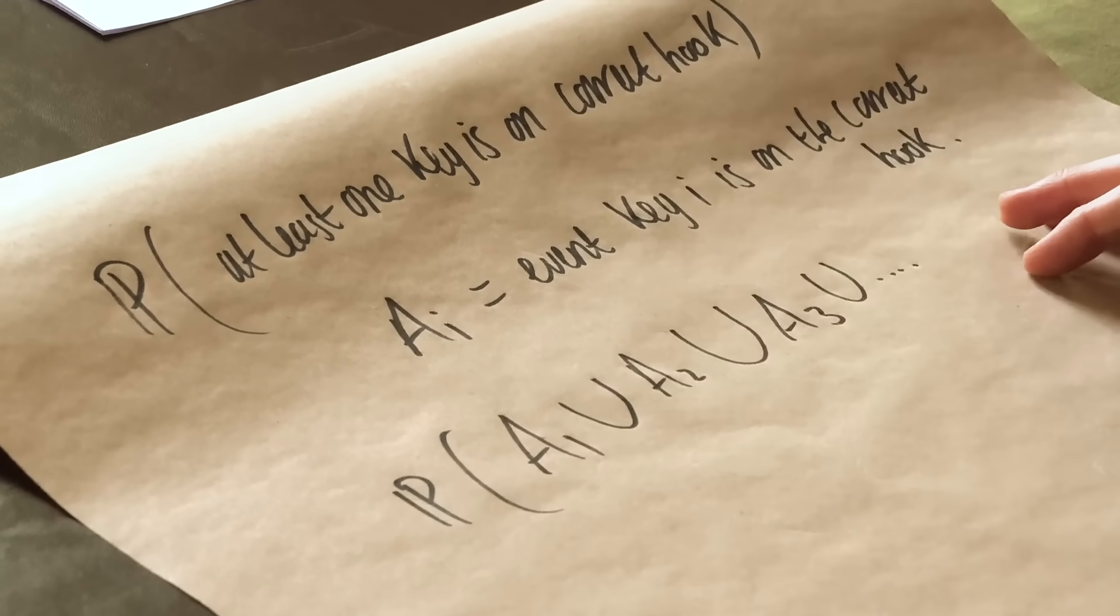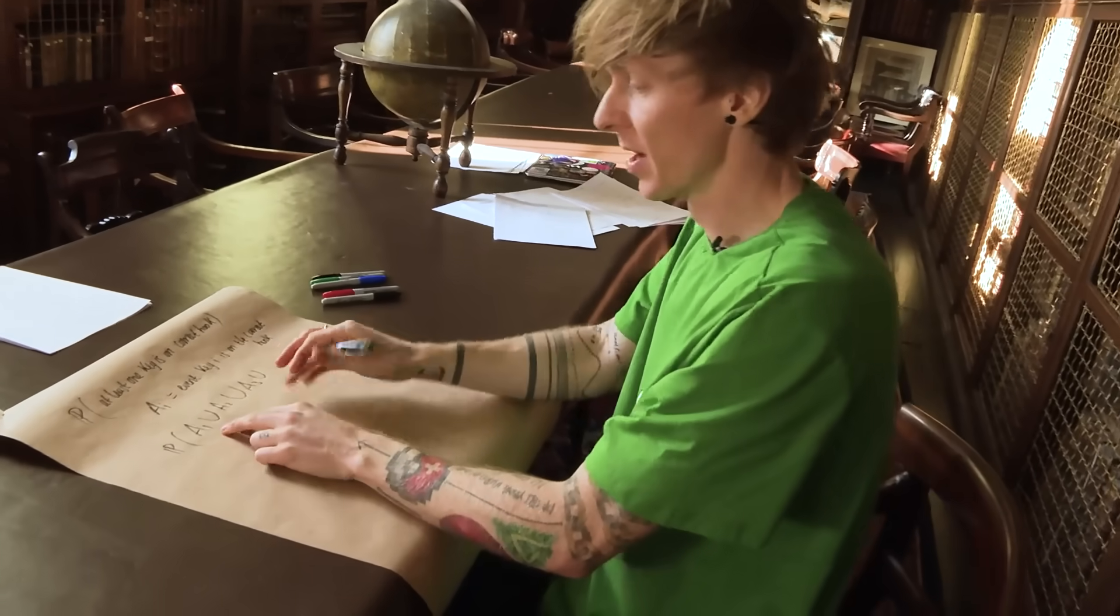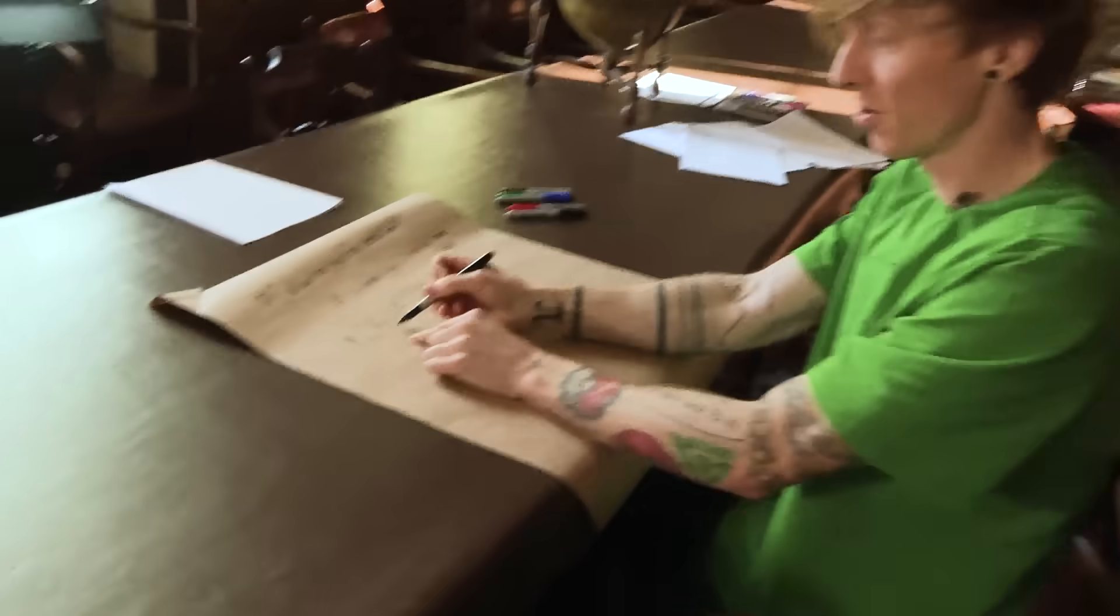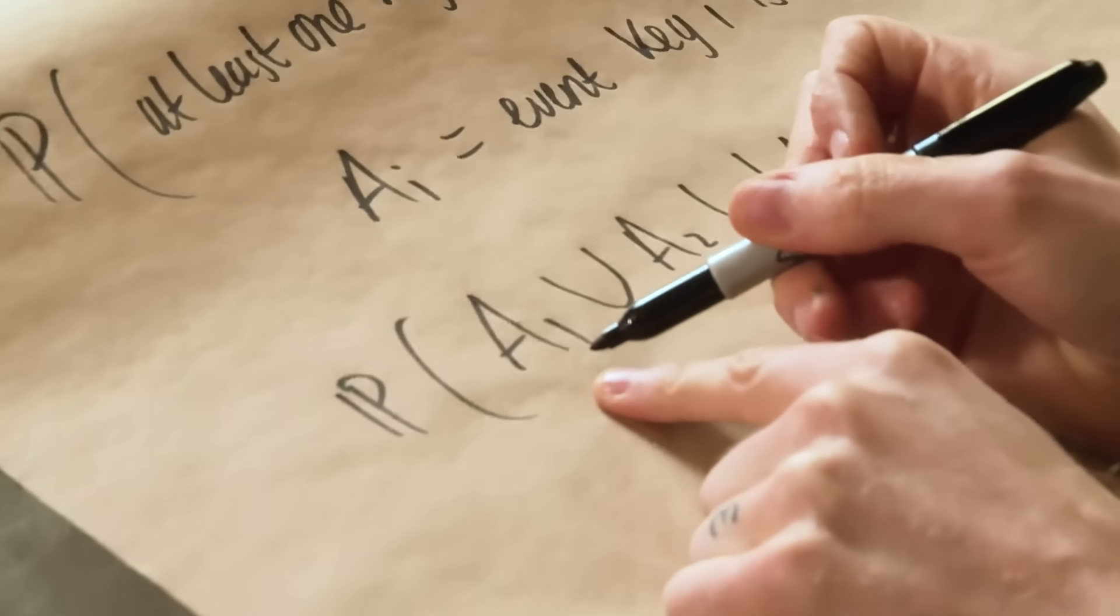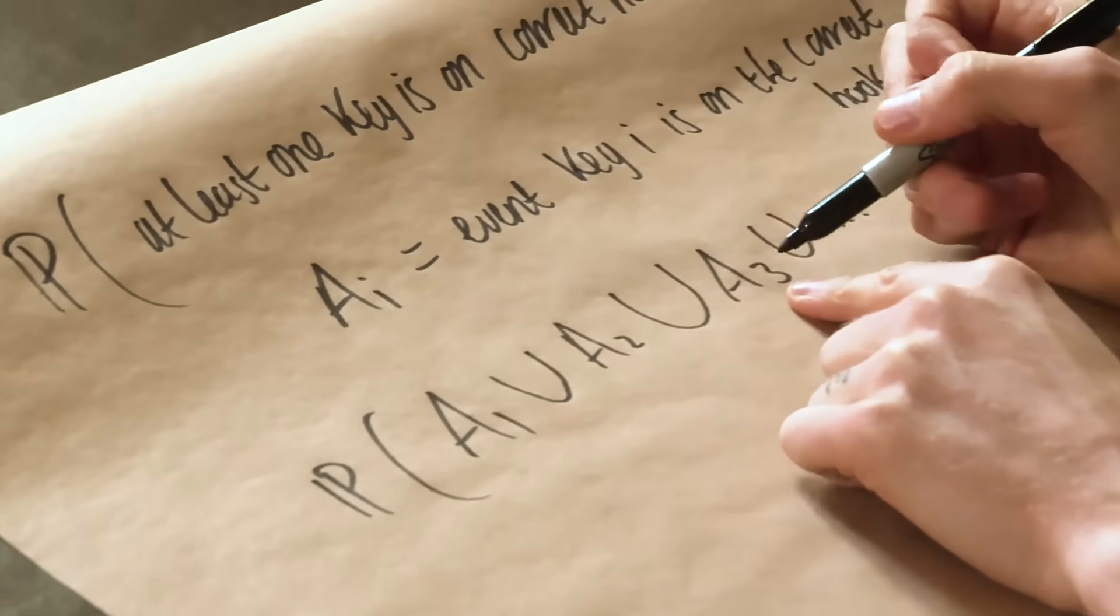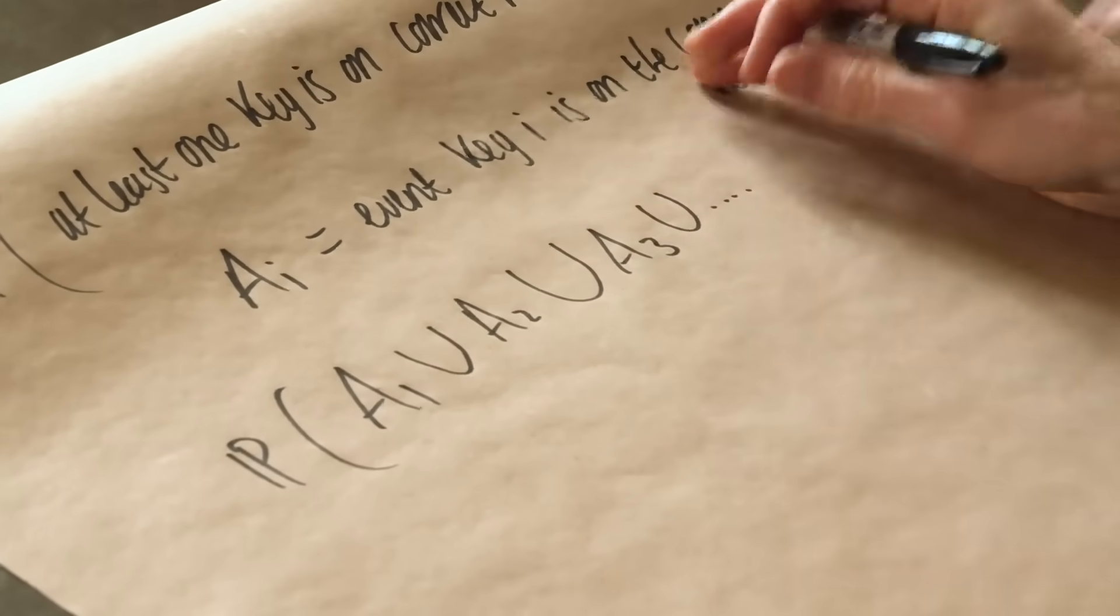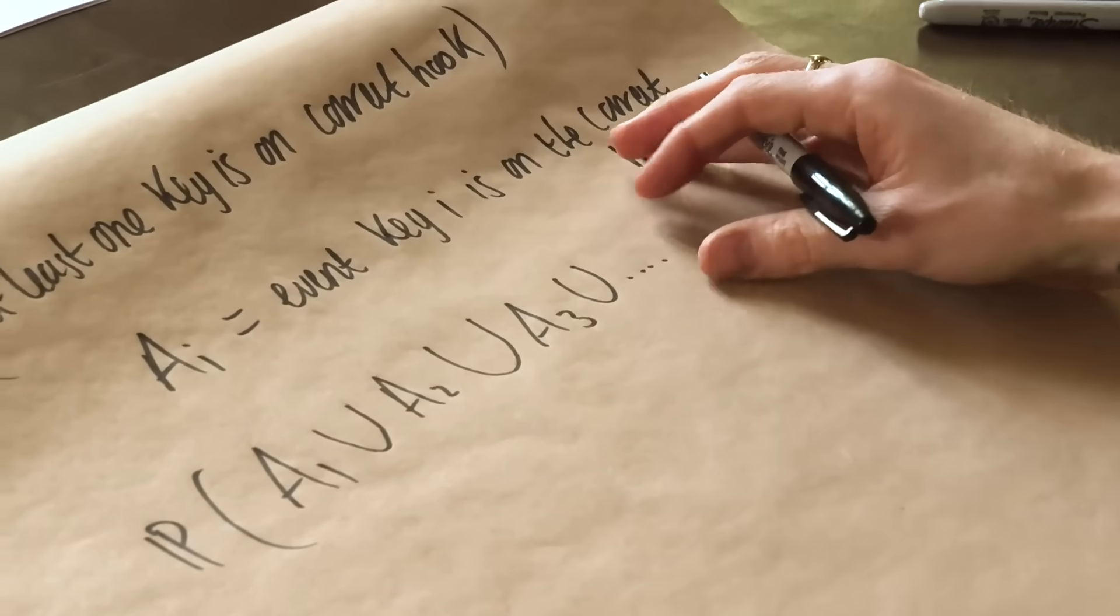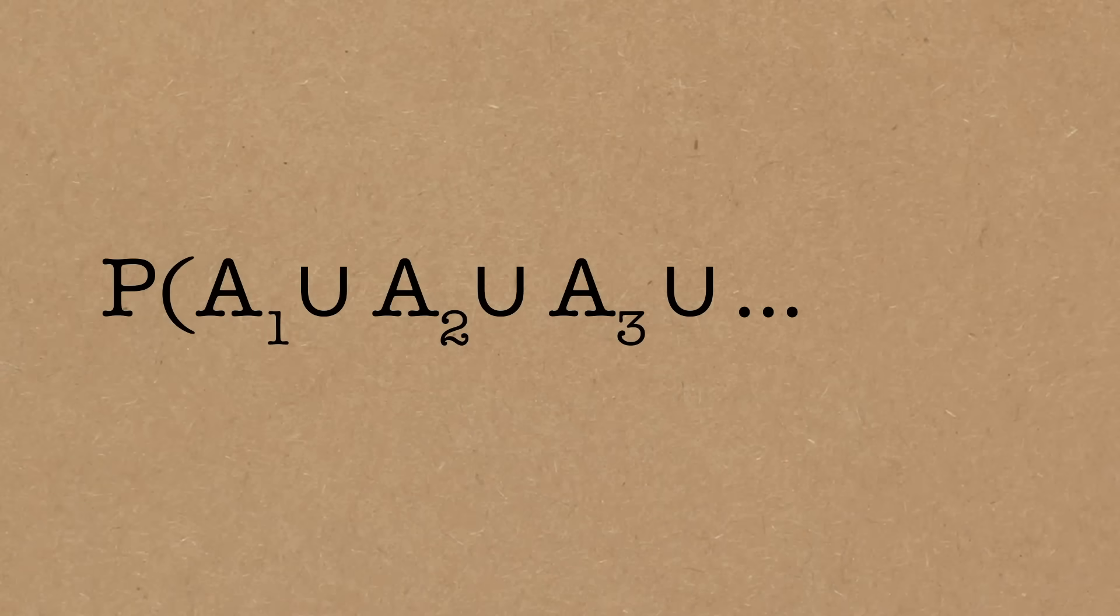These are the hooks. This is the event key one goes on hook one and it works. Key one could be correct, or key two could be correct, or key three, or key four. We're not specifying which number hook has to be correct. Any of these are fine. And it could be multiple of them, we don't mind that either. This is going to go all the way up forever. So to start with, just to keep track of what's going on, let's stop at some number n.